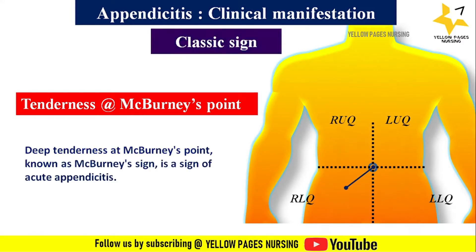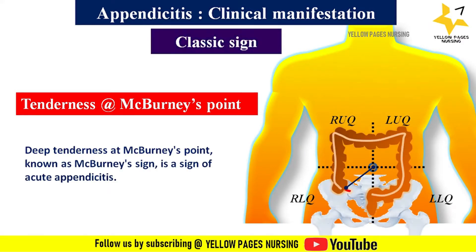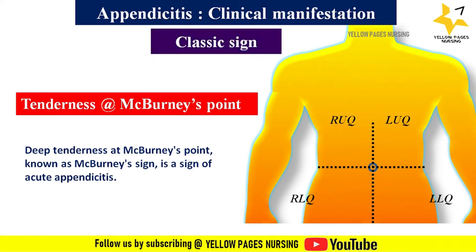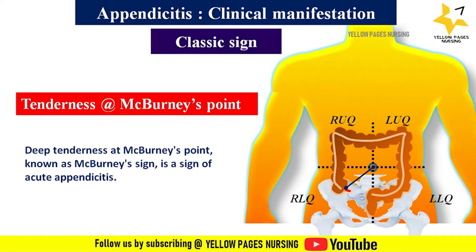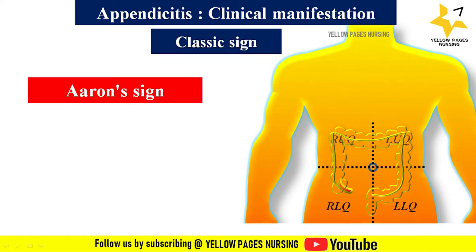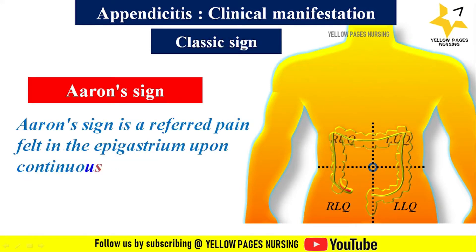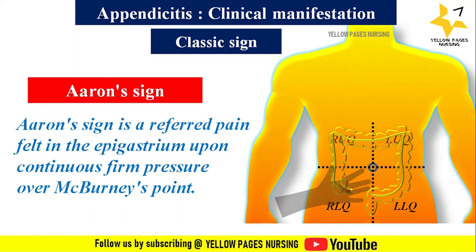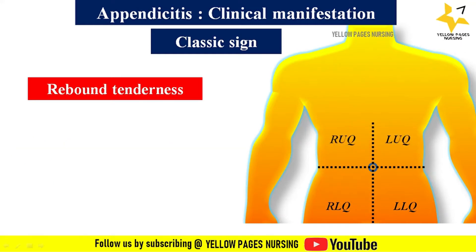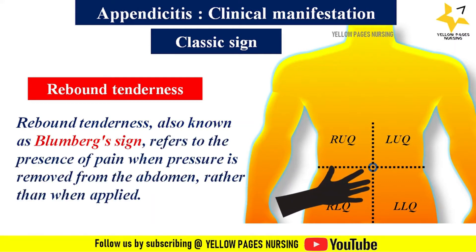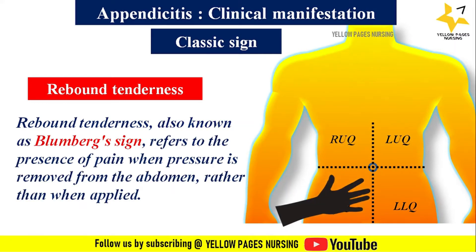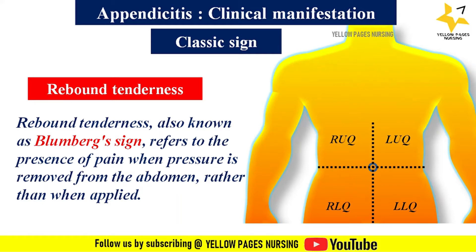Deep tenderness at McBurney's point is known as McBurney's sign and is a classical sign of acute appendicitis. Aaron's sign is referred pain felt in the epigastrium upon continuous firm pressure over McBurney's point. Rebound tenderness, also known as Blumberg's sign, refers to pain when pressure is removed from the abdomen rather than when it is applied.